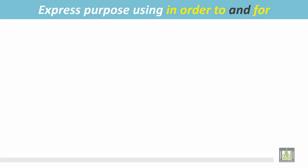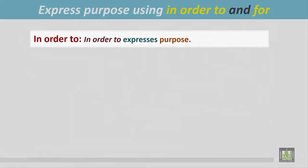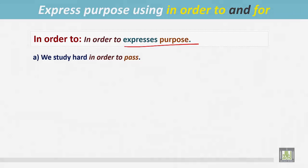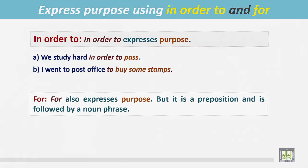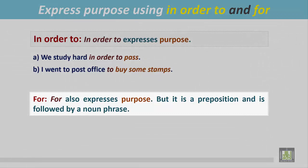Express purpose using 'in order to' and 'for.' To express purpose: 'We study hard in order to pass' — the purpose of studying hard is to pass. 'I went to the post office to buy some stamps' — the purpose of going to the post office is to buy some stamps. 'For' also expresses purpose, but it is a preposition and is followed by a noun phrase.